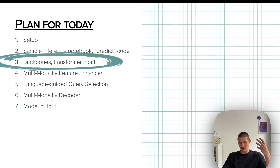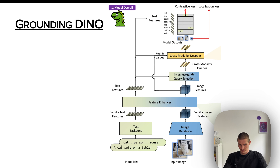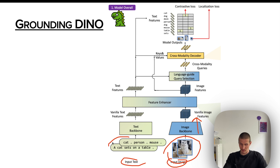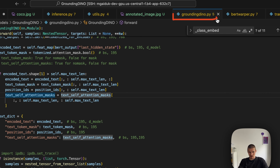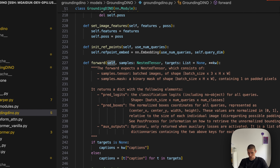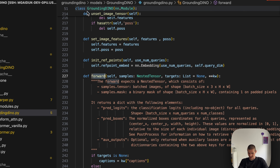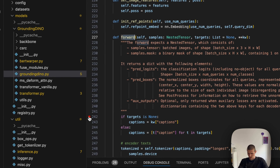Next let's talk about the very beginning of the model — the backbones — the image backbone and text backbone, and how all of that is passed to the transformer. Coming back to the diagram of the entire model: we have input text and input image. We apply the image backbone called Swin Transformer to get image embedding representations, and then apply the BERT model to get the text embedding representation. The start of the model is located in the ground module — I find the forward method of the grounding DINO class and put a breakpoint at the very beginning.